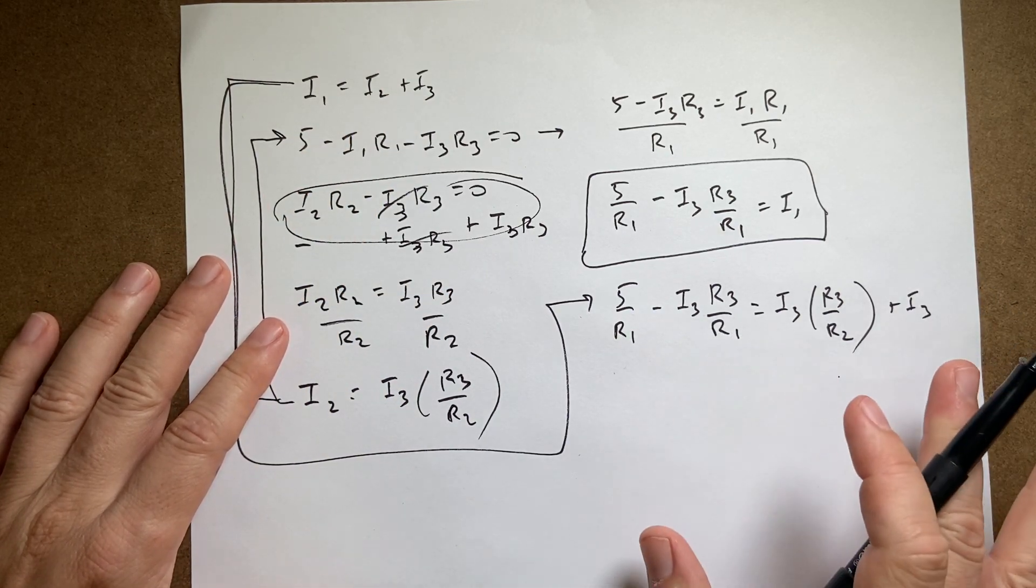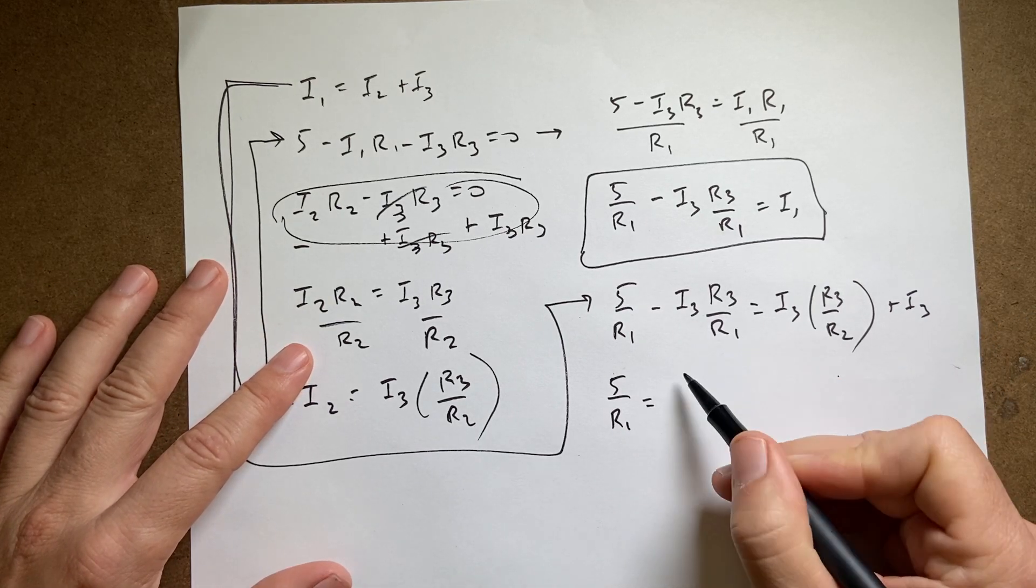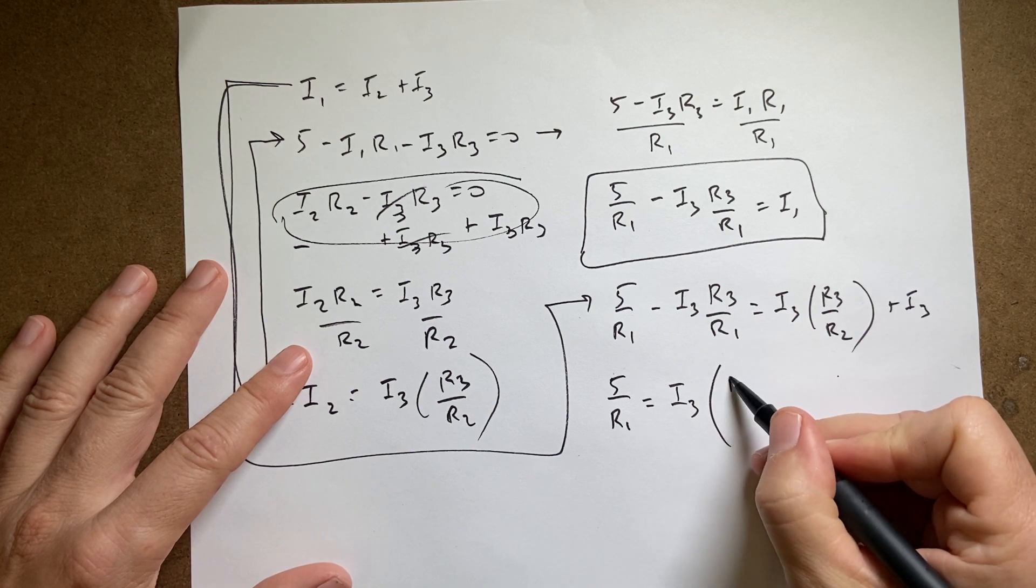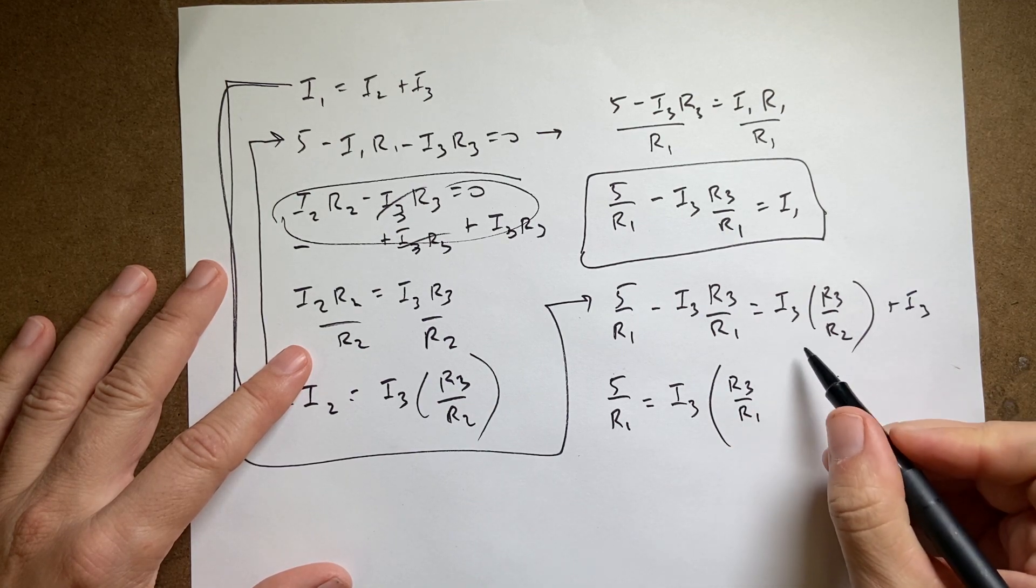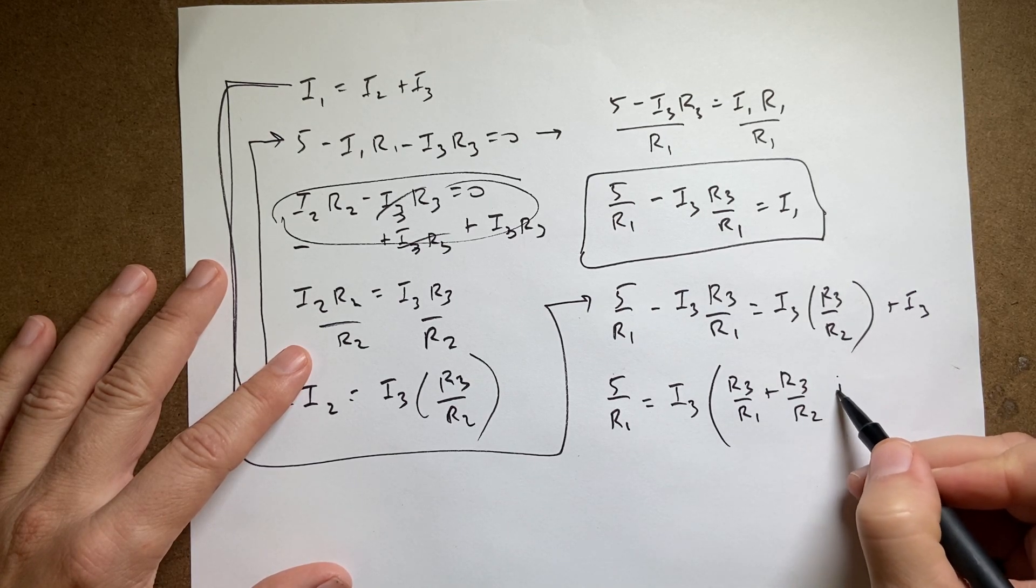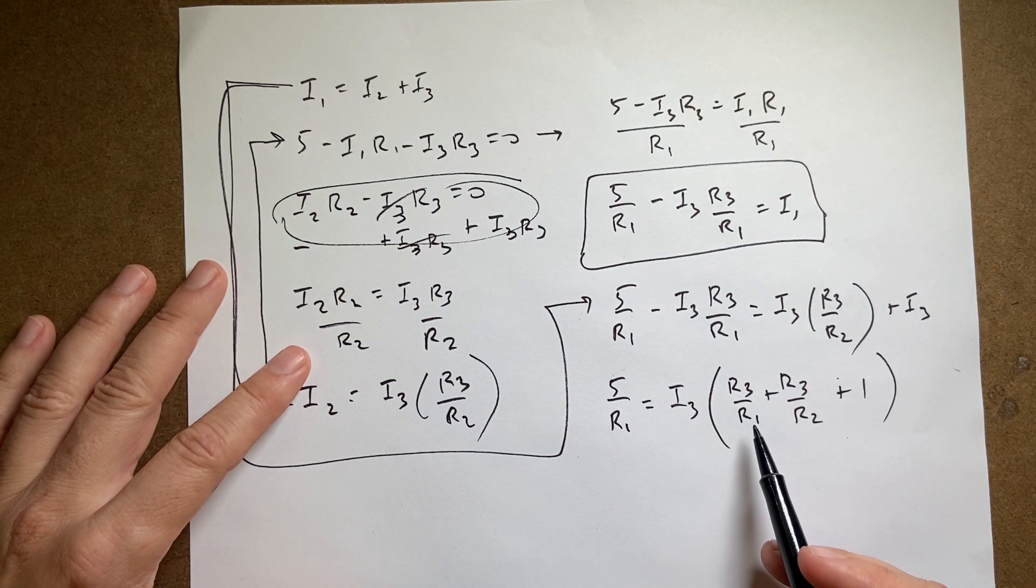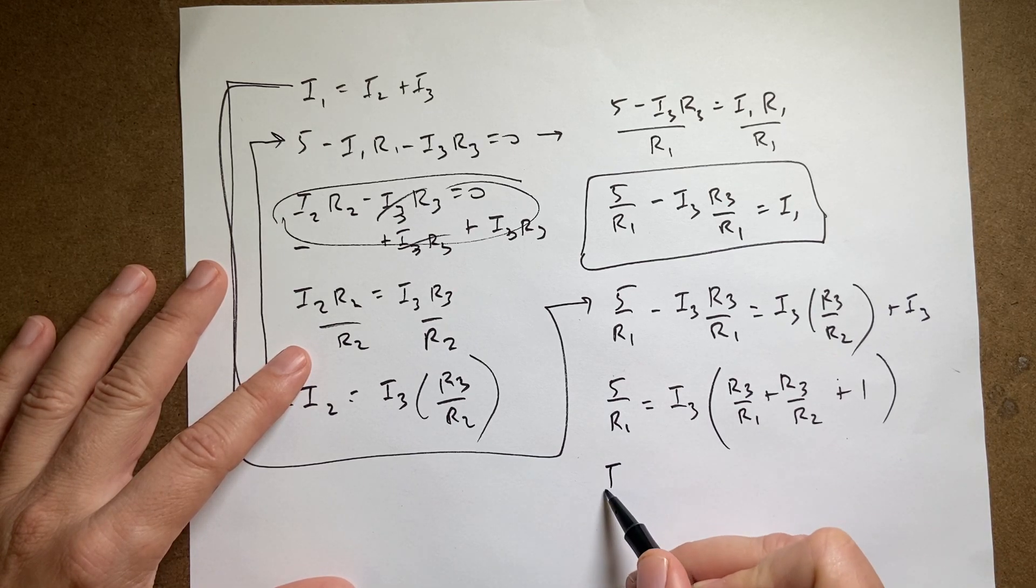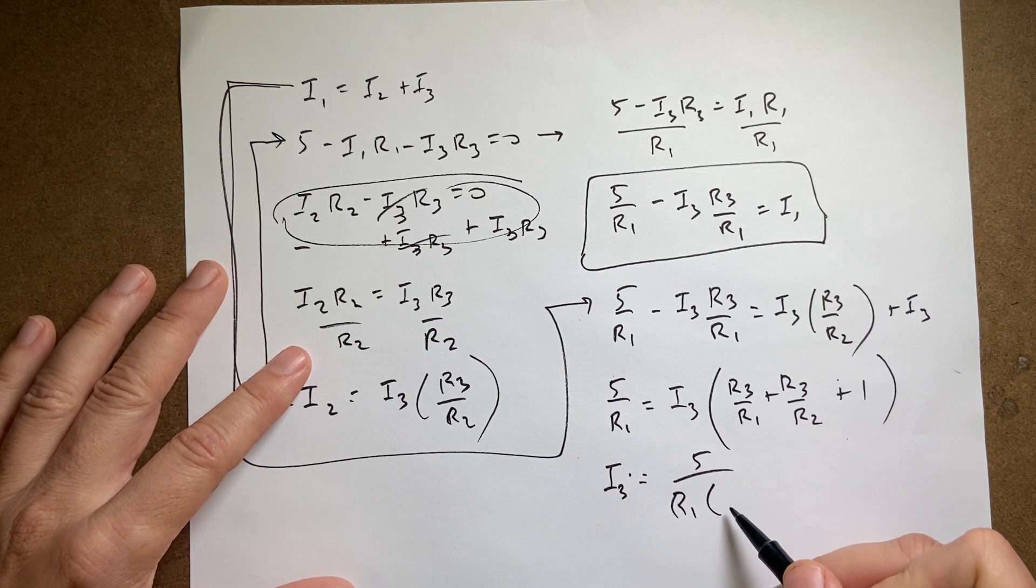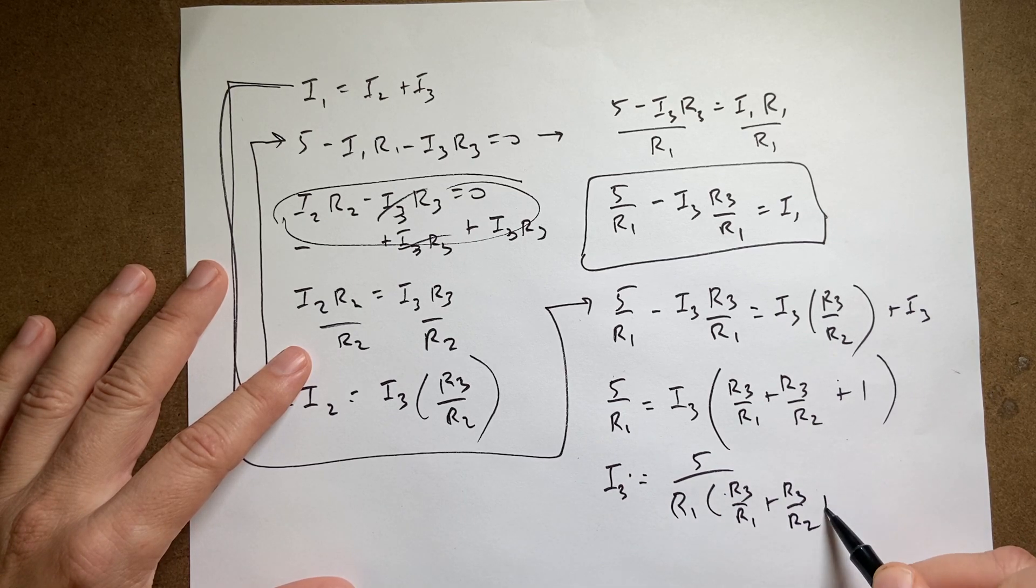So I want to get all the I's on one side. So I'm gonna add this to both sides and I get 5 over R1 equals I3 times R2. I'm gonna go ahead and factor it out. That would be plus to each side. So I'm gonna have R3 over R1, R3 plus R3 over R2 plus 1. And then this is just a number, right? So I can divide, I have it. I have I3. I3 is going to be equal to 5 over R1 times R3 over R1 plus R3 over R2 plus 1.